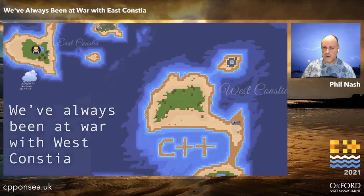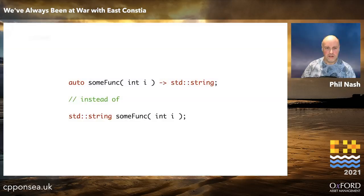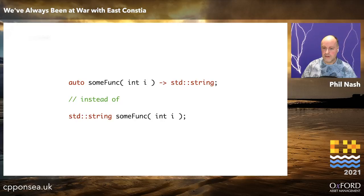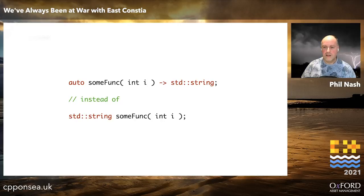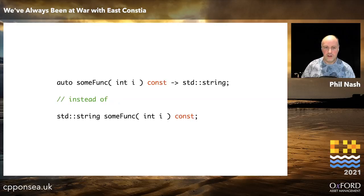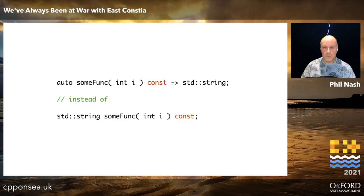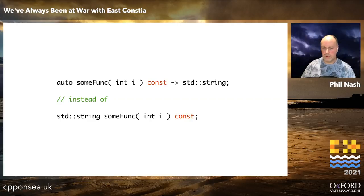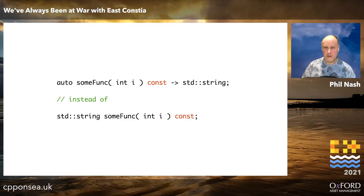I was thinking about what things could go even further east — further to the right — in C++ declarations, and what I came up with was function declarations. As of C++11, we can use trailing return types, and the actual return type itself goes even further to the east than const. We do also have to put the `auto` keyword at the front and the arrow in there, but otherwise this is identical as far as the compiler is concerned to the more traditional form.